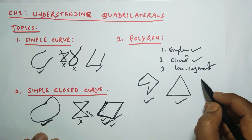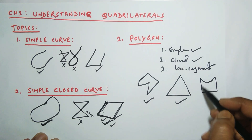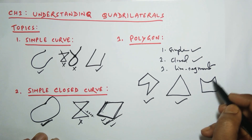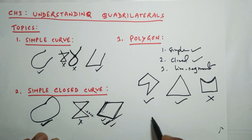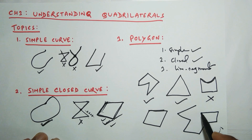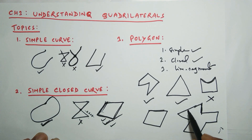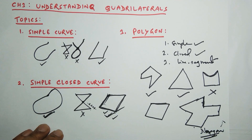If I draw a curve with some line segments but one part is not a line segment, then although it is simple and closed, it is not a polygon because not all parts are line segments. Here is another polygon — a quadrilateral — made of line segments. And this one has nine sides, so it is a nonagon. So when a curve is simple, closed, and made entirely of line segments, it is known as a polygon.